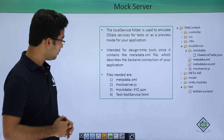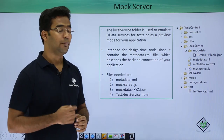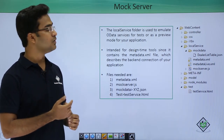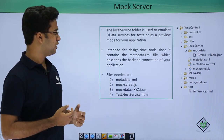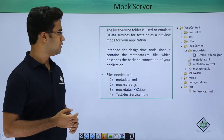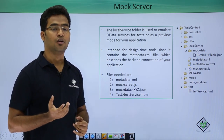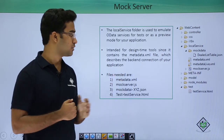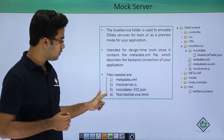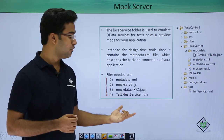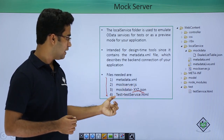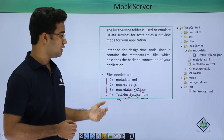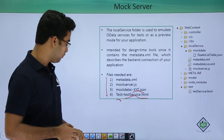Mock servers are used to emulate the OData service we are getting — used for test and preview purposes when the real server is not available. They contain a metadata.xml which describes the back-end connection of the application. The files needed are metadata.xml, mockserver.js, and a mock data JSON file. Within the test folder, we create a test service HTML file. This is just a basic overview; we will discuss mock servers in detail in other sessions.